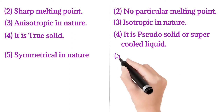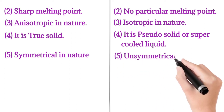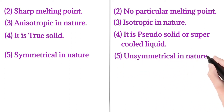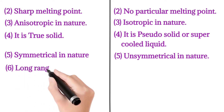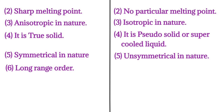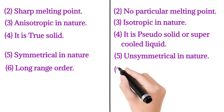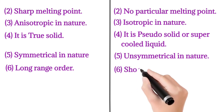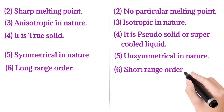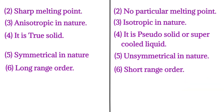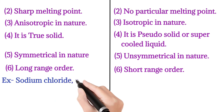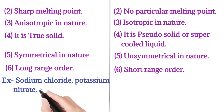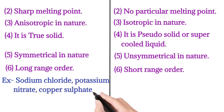In the case of crystalline solid, they are symmetrical in nature, whereas amorphous solids are unsymmetrical in nature. Furthermore, crystalline solids have a long-range order, while amorphous solids have only a short-range order.